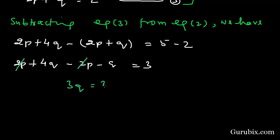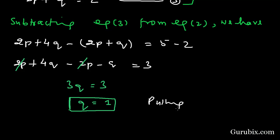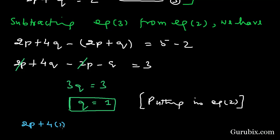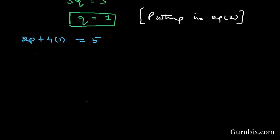This means q is equal to 1. Now we substitute this value into equation number 2 to get the value of p. Equation number 2 is 2p plus 4q equals 5; substituting q equals 1, we get 2p equals 5 minus 4.